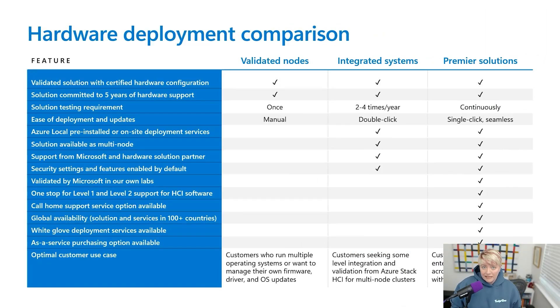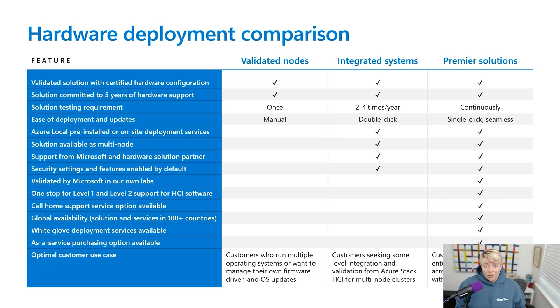Validated Nodes give you the most flexibility. You can purchase a complete setup from a hardware vendor or build your own using individual components from the validated list. For example, if you have a spare server but the network card isn't on the Azure Local validated component list, you can swap it out for one that is. Once all components meet the requirements, you have a validated node ready for deployment. You're in full control — the hardware, deploying the software, managing firmware, driver updates, and keeping the Azure Local operating system up to date. For experienced IT teams or service providers who want a tailored experience, this is a great option and may also be attractive from a budget perspective.